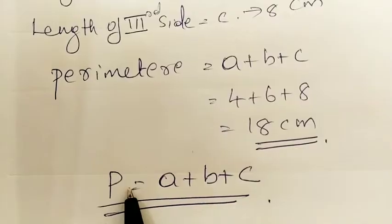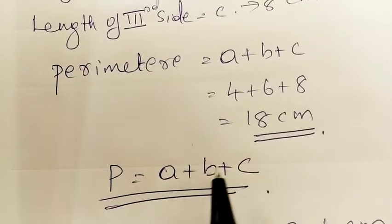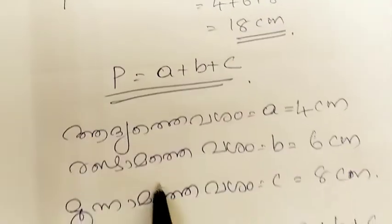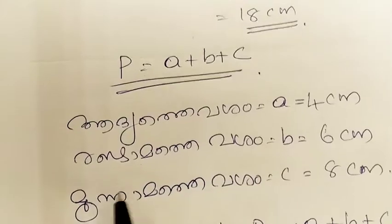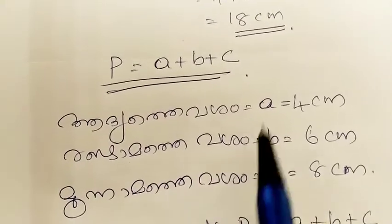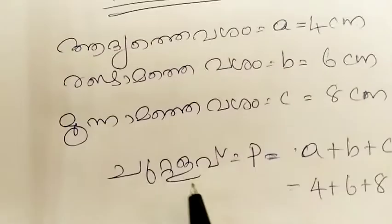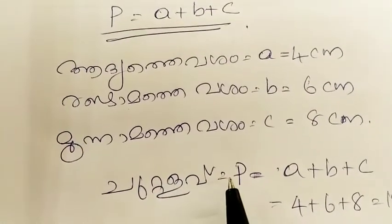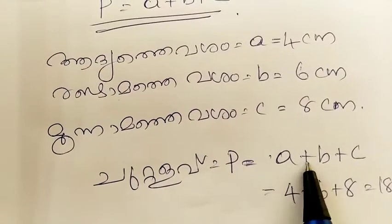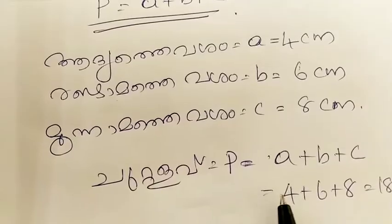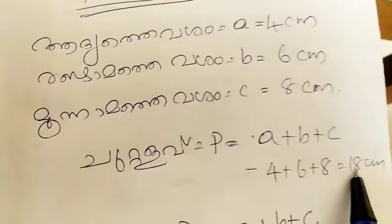Perimeter P is equal to A plus B plus C. In this case, A equals 4 cm, B equals 6 cm, C equals 8 cm. So perimeter P equals 4 plus 6 plus 8, which is 10 plus 8, equals 18 cm.